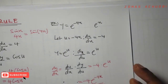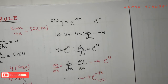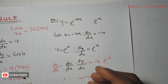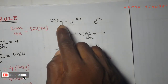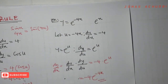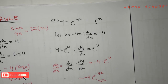The idea here is simply: identify the inner function, call it u, differentiate it, then go back to the parent function, differentiate it, and multiply the two derivatives together. Where you have more than two functions — say three — you multiply the three derivatives as the case may be.